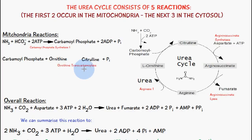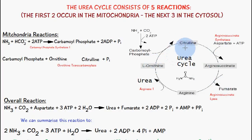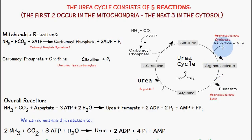The next few reactions occur in the cytosol. The citrulline produced in the mitochondria enters the cytosol, where arginosuccinate is formed using aspartate and ATP. This step is catalyzed by arginosuccinate synthetase.